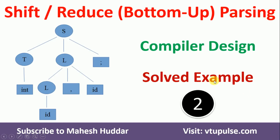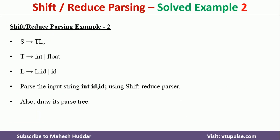Hi, welcome back. In this video, I will discuss how to apply shift-reduce parsing to check whether the given input string is valid given the grammar. This is solved example number 2. The link for other solved examples is given in the description below. In this case, we have been given the grammar with three rules: S → T L semicolon, T → int or float, L → L comma id or id. We need to validate whether the input string, that is 'int id comma id semicolon', is valid or not with respect to the given grammar.